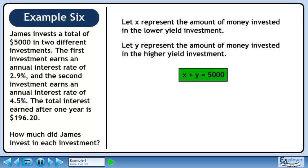Let x represent the amount of money invested in the lower-yield investment, and let y represent the amount of money invested in the higher-yield investment. Since the total amount invested is $5,000, we have the equation x plus y equals 5,000.